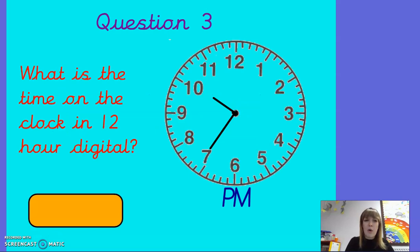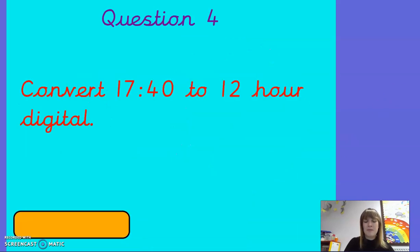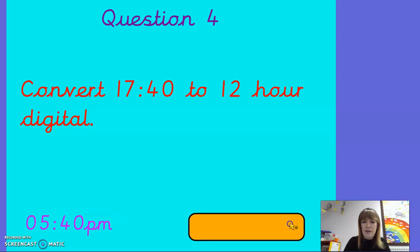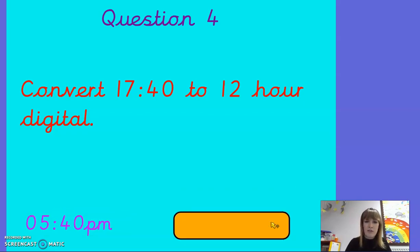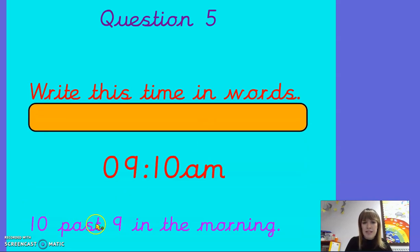Question three — what is the time on the clock in 12-hour digital? It is 10:35pm. Well done if you got that correct. Question four — convert 17:40 to 12-hour digital. The answer is 05:40pm. Well done if you got that correct. Question five — write this time in words. What's 09:10am? It should be 10 past nine in the morning. Well done if you got that correct.